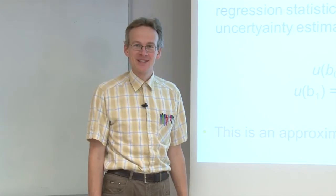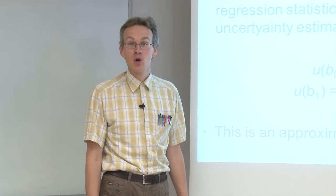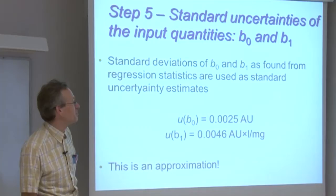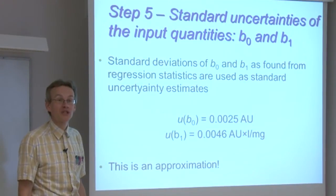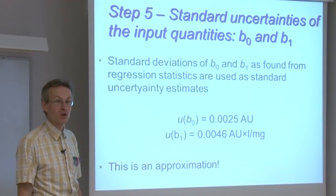The next input quantities are the intercept and slope of the calibration line, B0 and B1. Here we take an approximate solution or an approximate approach.